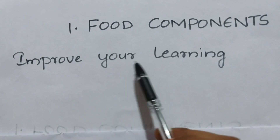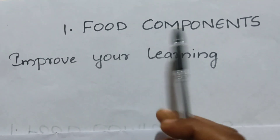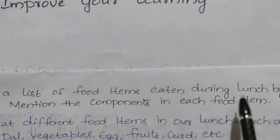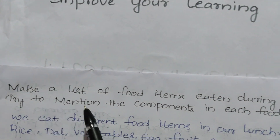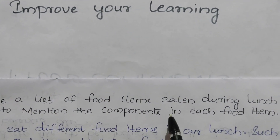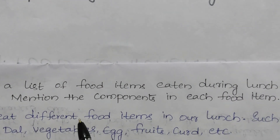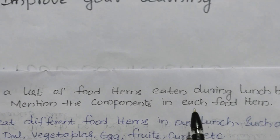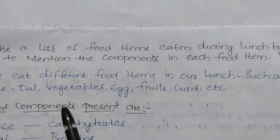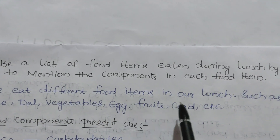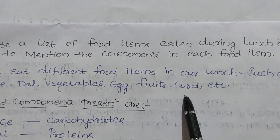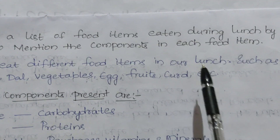We will see 'Improve Your Learning' for the lesson on food components. The first question is: make a list of food items eaten during lunch and mention the components in each food item. Children, each of us eat different food items at lunch. For example, we eat rice, dal, vegetables, egg, fruits, curd, and also chapati or roti.